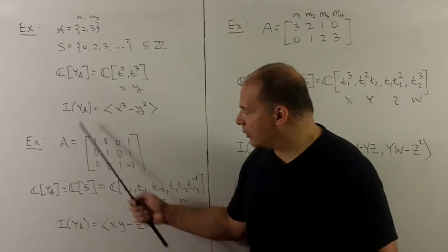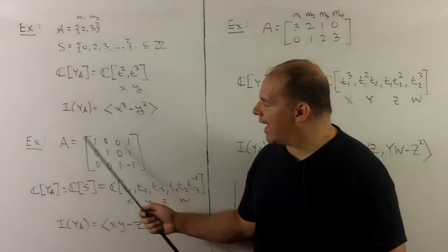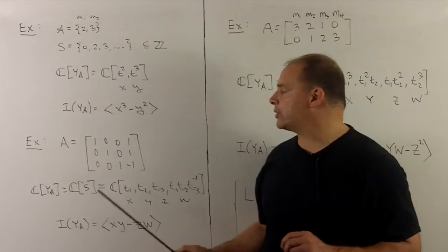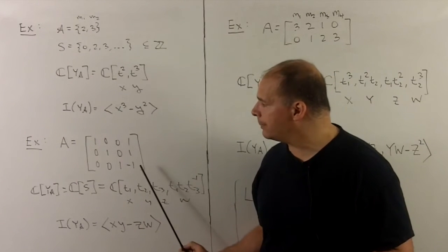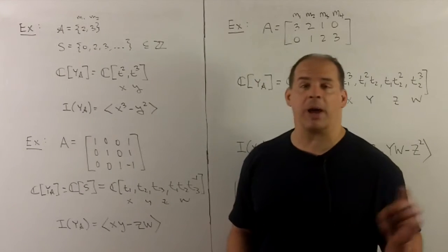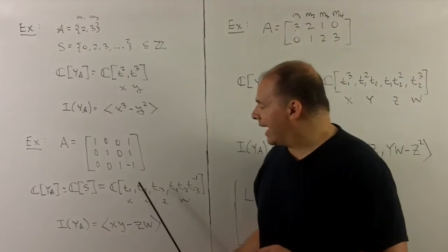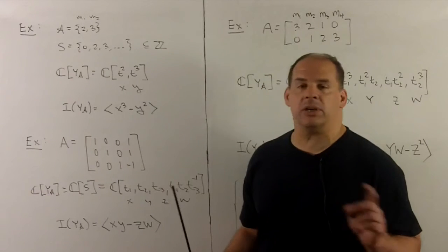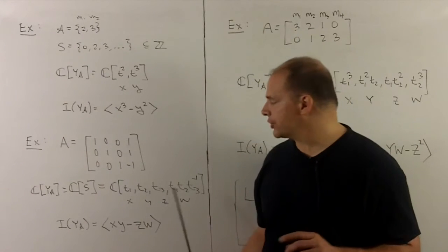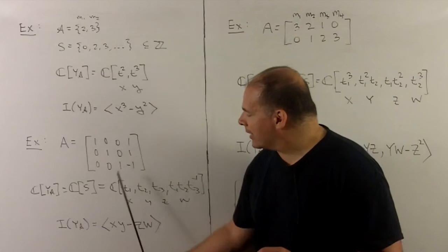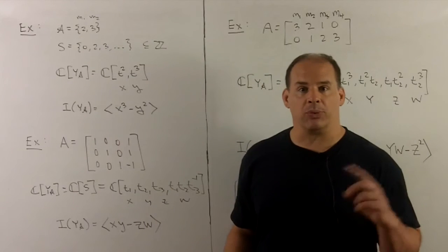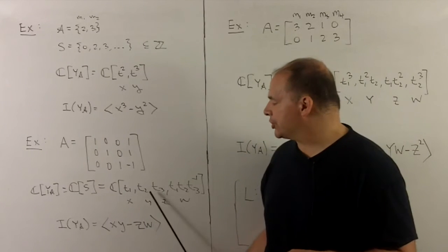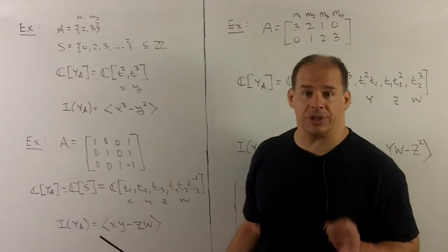Next, again, we've seen this one before. I'll take A in matrix form, it's going to be 1, 0, 0, 0, 0, 0, 0, 1, 1, 1, minus 1. The coordinate ring for the corresponding Y sub A, the entries are T1, T2, T3, and T1, T2, T3 inverse. So the relation among these, if we label these X, Y, Z, and W, is XY minus ZW, and we've seen this example from before. You can check, see if this matches up with the toric ideal, which it does.